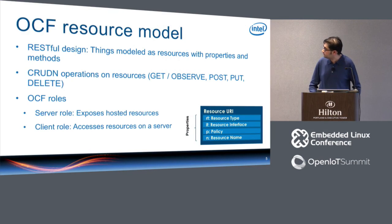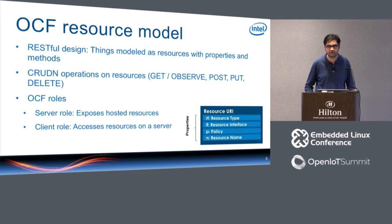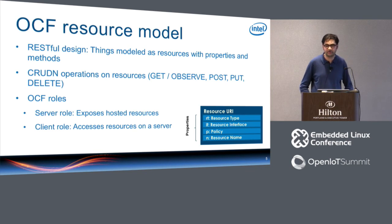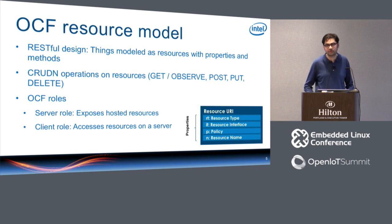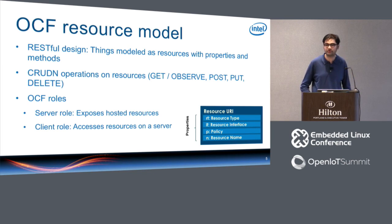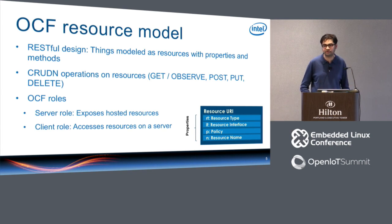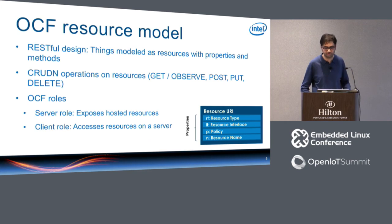The OCF protocol is based on the REST architectural style, where all things are modeled as resources. CRUD operations — create, retrieve, update, delete, and notify — may be performed on these resources via standard verbs: GET, PUT, POST, and DELETE. Things communicate with each other by exchanging resource representations. The schemas for all these representations are completely specified by OCF. The observer/notify operation is a special case of the GET method, which lets you subscribe to notifications from a resource when there's a change in its representation.